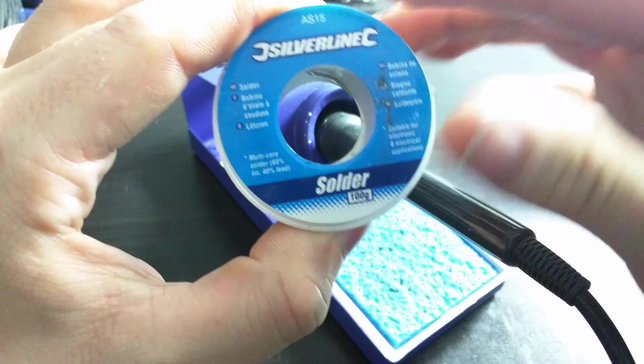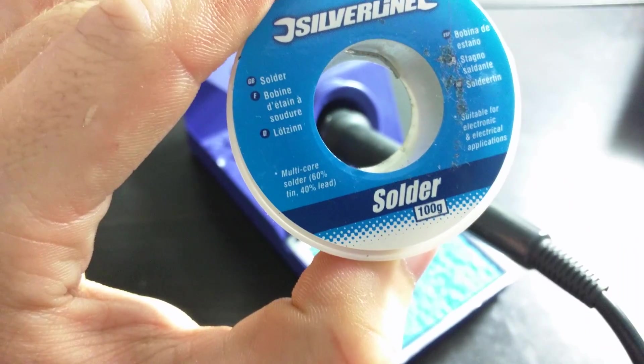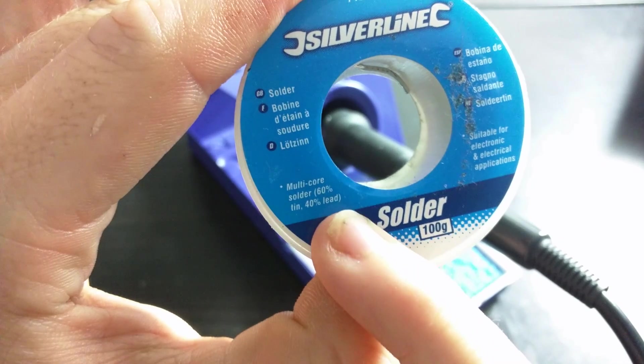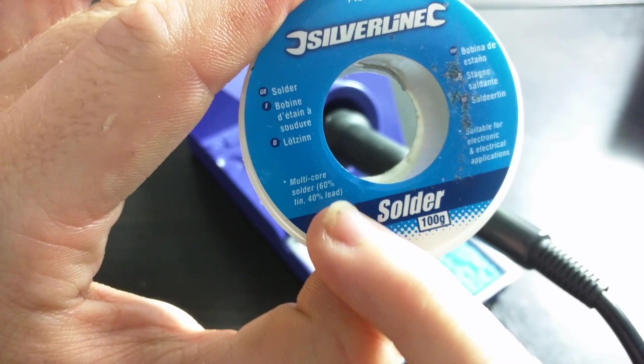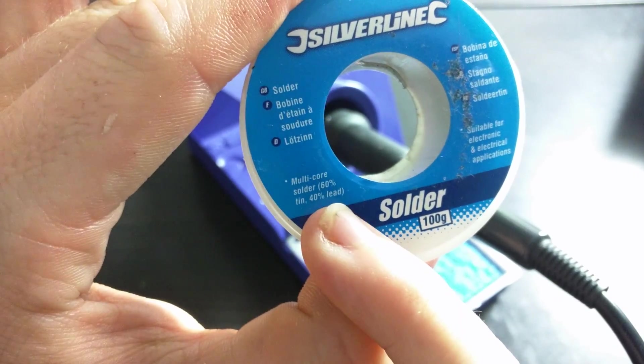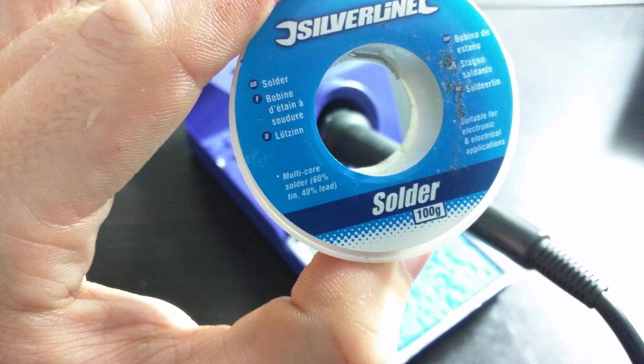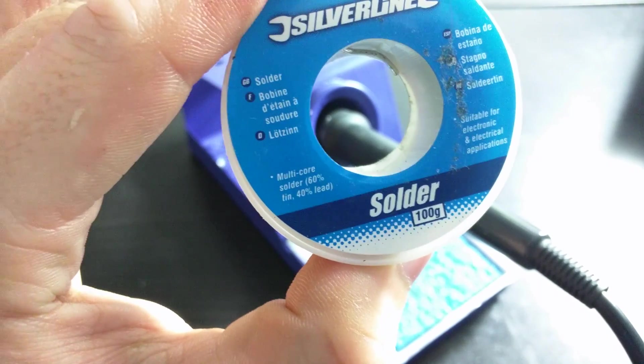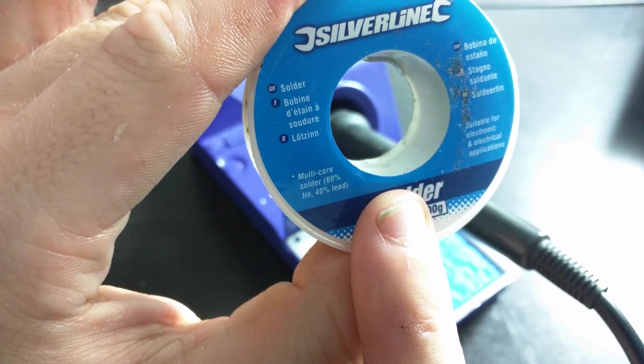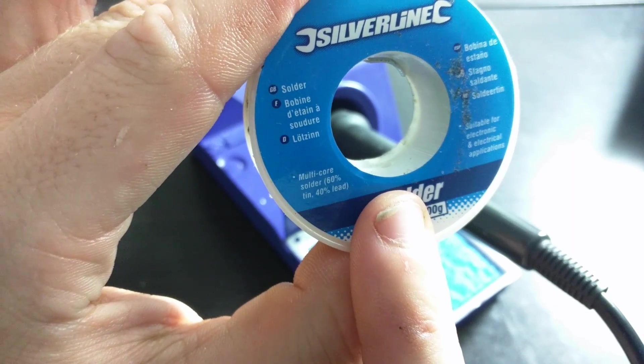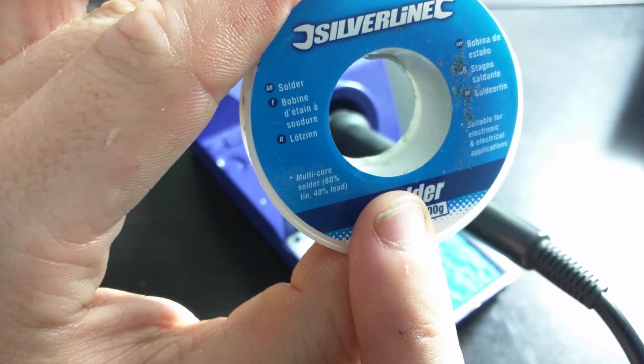The best kind of solder if you can get a hold of it in your country is lead-based solder, usually 60-40, 60% tin and 40% lead. Personally, I find lead-free solder to be very difficult to solder with. Lead-based solder makes easier connections and flows way easier than lead-free solder.